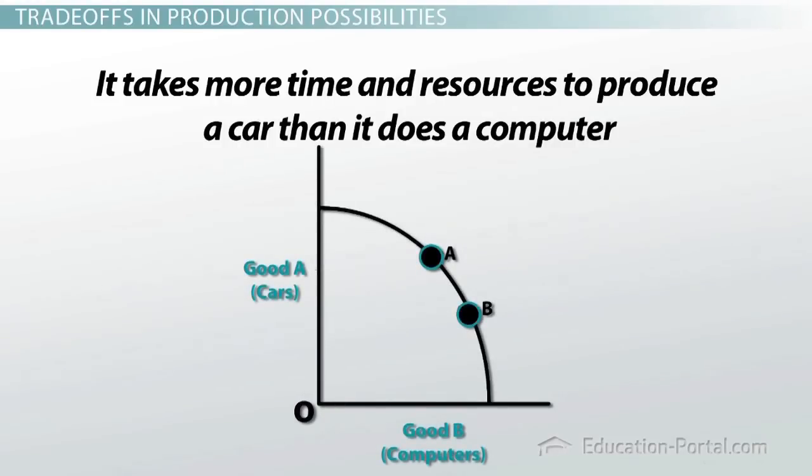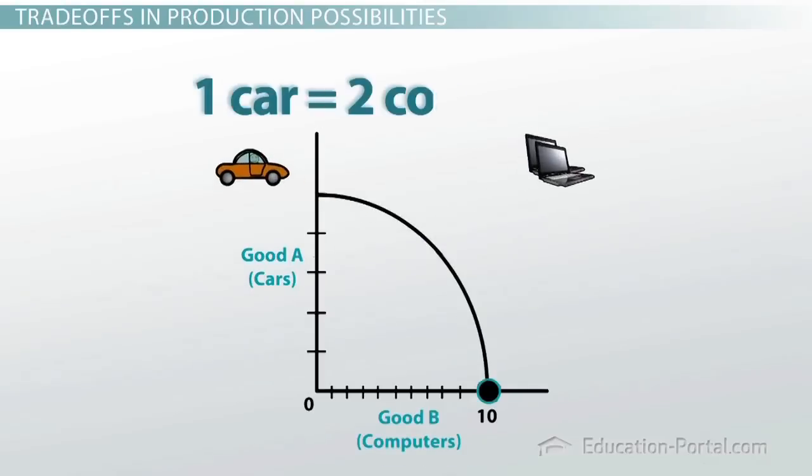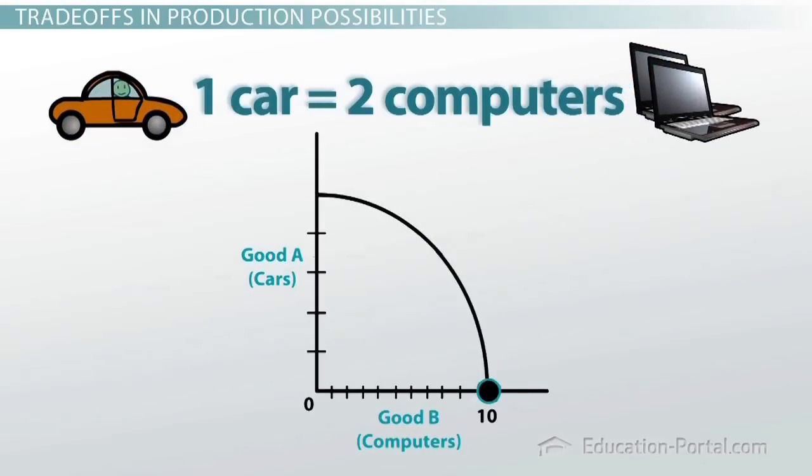I just said that we could produce zero cars and ten computers, or five cars and zero computers. But there are many other production possibilities in between these two that we could choose instead. With our finite resources, we could choose to produce two cars and six computers, or four cars and two computers. Then again, we could say three cars and four computers.